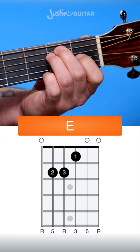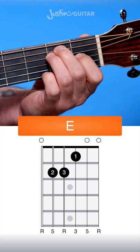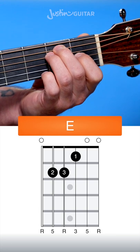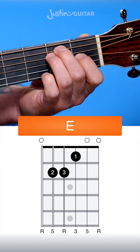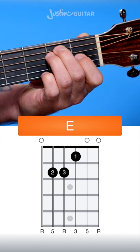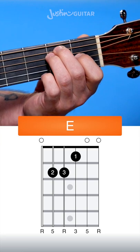Right on your fingertips, thumb around the back, go through and check all the notes are ringing out good. If you get something that's wrong, fix it, then try again.